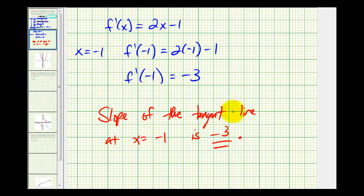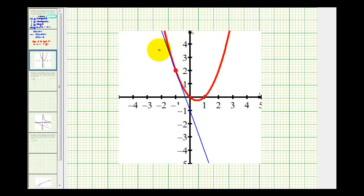And let's go ahead and verify that graphically. In red we have the graph of the given function. And so what we found was the slope of this tangent line, which is equal to negative three.